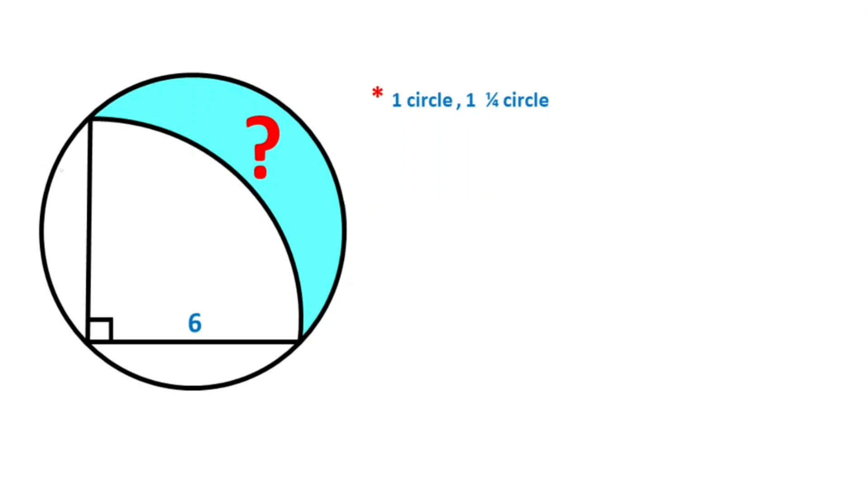Hello everyone, in this video we have one circle and one quarter circle here, and this side is given as six units. The blue shaded area is asked. First step, if we connect these two corners like this, notice that this blue line must be equal to the diameter because it is opposite of 90 degrees.